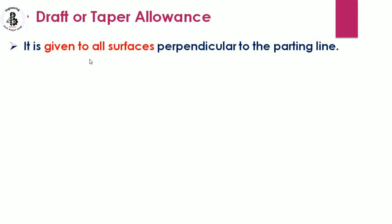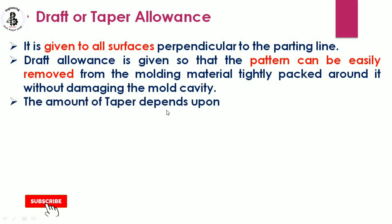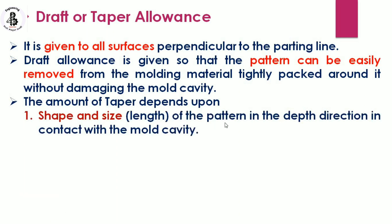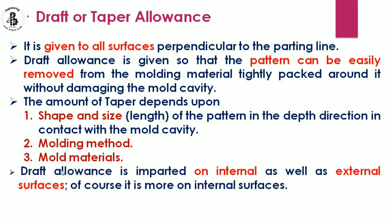The third allowance is draft or taper allowances, given to all surfaces perpendicular to the parting line. Draft allowance is given so that the pattern can be easily removed from the molding material packed tightly around it without damaging the mold cavity. The amount of taper depends upon the shape, size, and length of the pattern in the depth direction in contact with the mold cavity, the molding method, and the mold material. Draft allowance is imparted on both internal and external surfaces, and is more on internal surfaces.